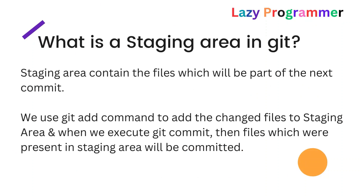The next question is: what is the staging area in Git? The staging area contains the files that will be part of your next commit. We use the 'git add' command to add changed files to the staging area. When you first make changes to a file, it is untracked by Git. Using 'git add <filename>' moves that file from untracked to the staging area. Whenever you execute git commit, all files present in the staging area are committed to the repository as a record.